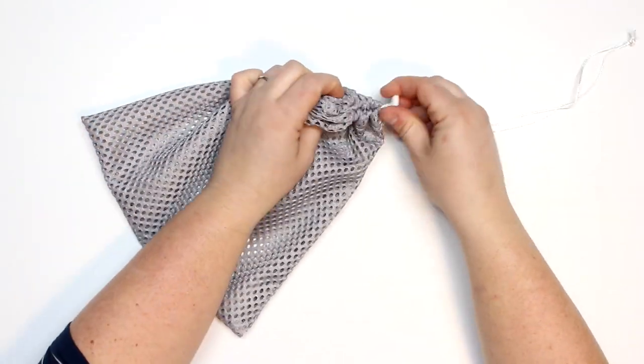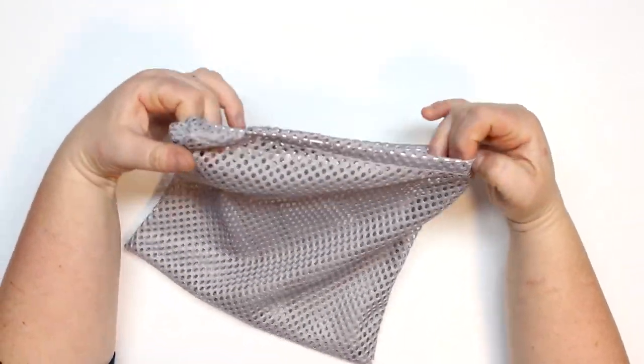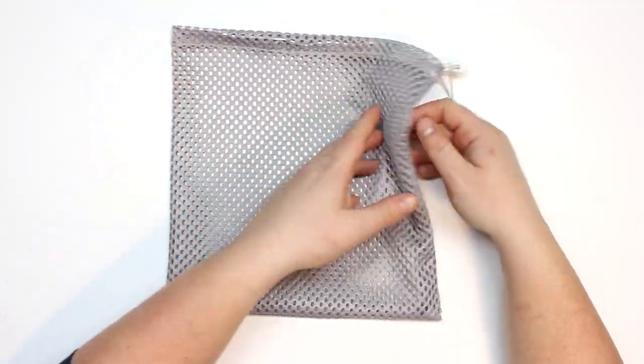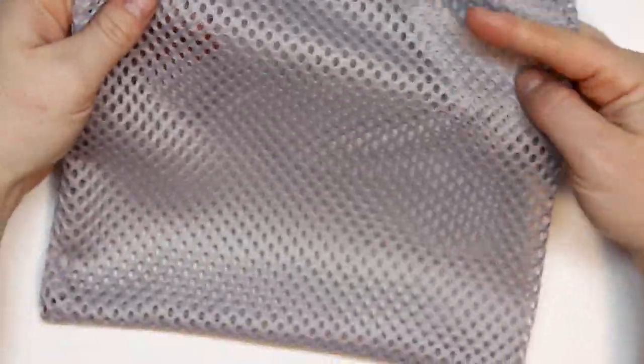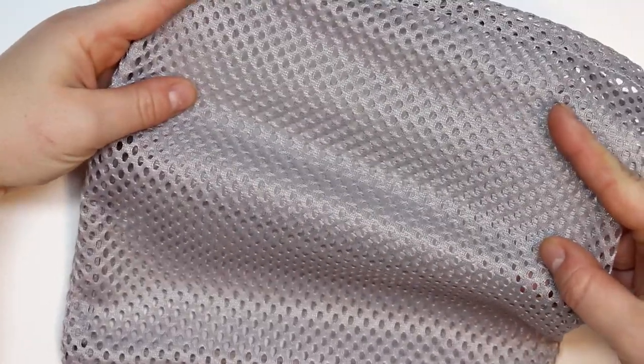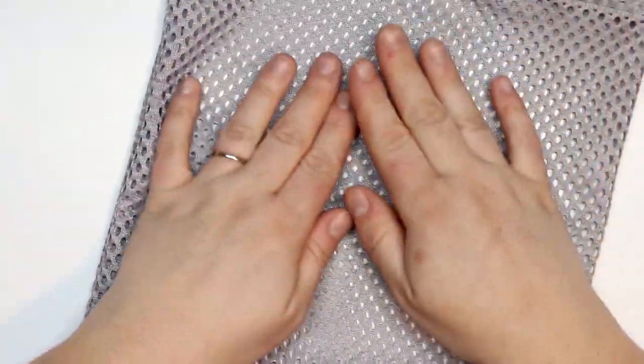This is perfect for produce so you can stop using the bags at the stores, wet bathing suits, beach toys, or anything else you want to have a little bit of aeration. Fabricville.com was kind enough to send me this beautiful mesh fabric.